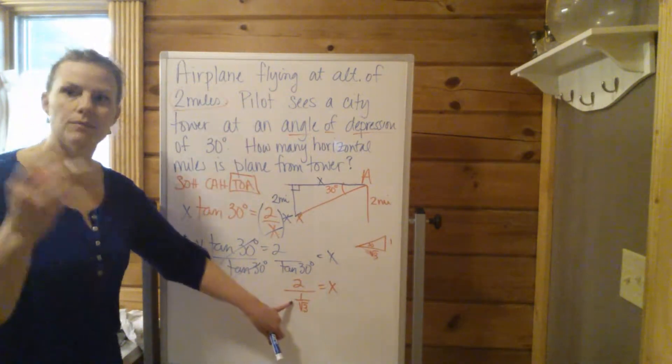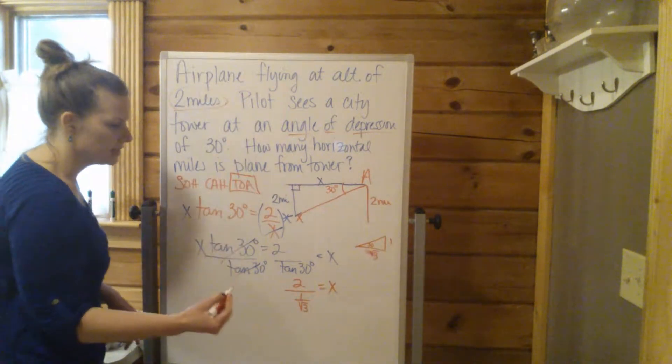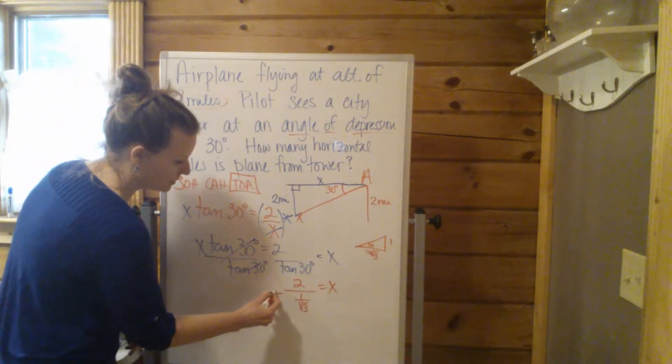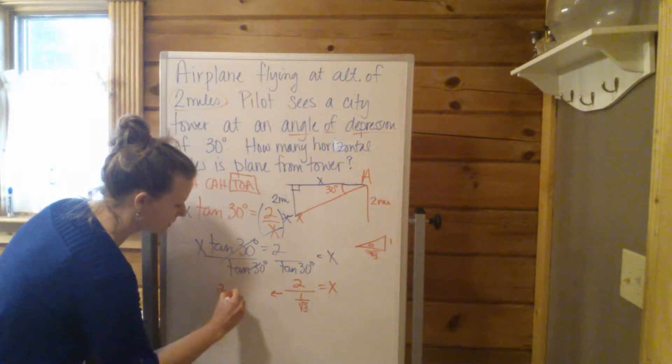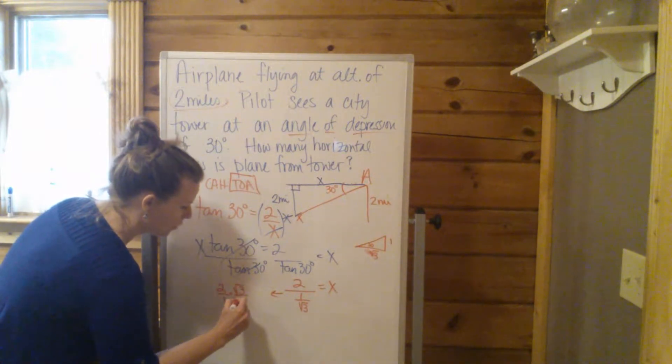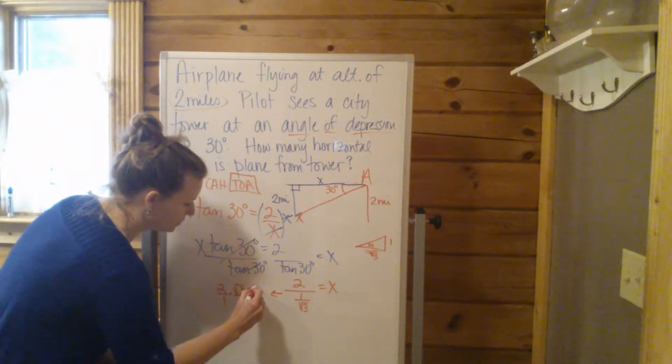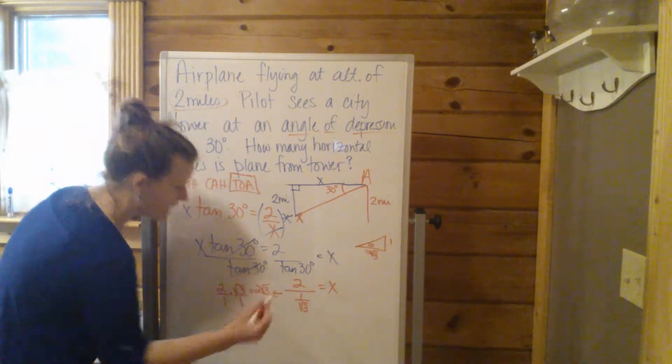Do a little flip the bottom, multiply by the reciprocal, and you're going to get 2 over 1 times the square root of 3 over 1, which gives you 2 root 3.